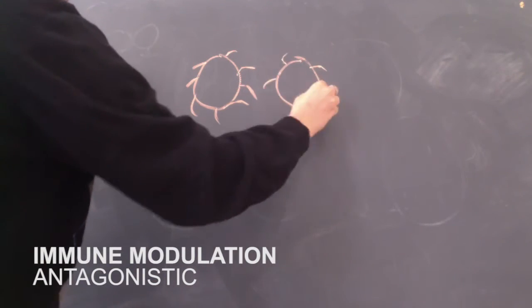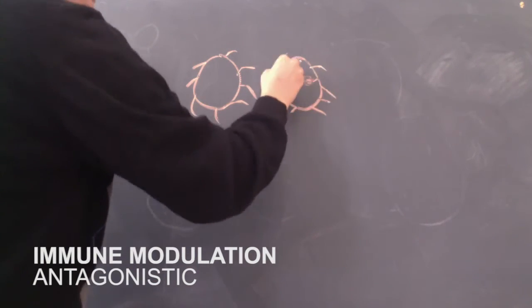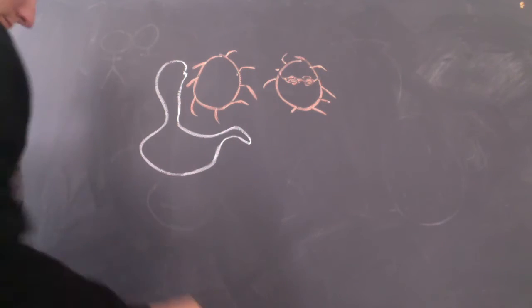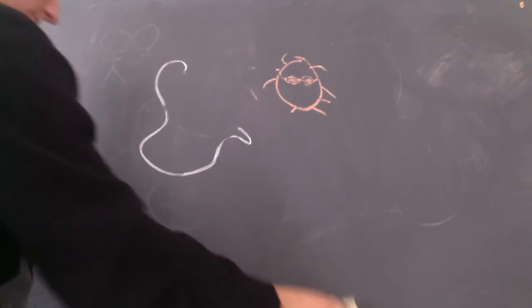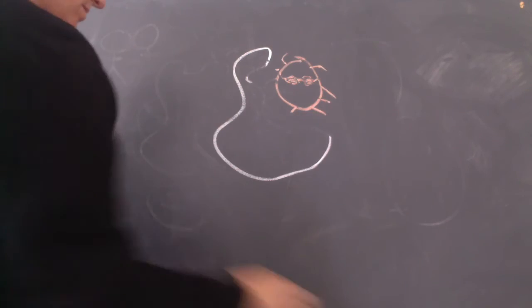On the antagonistic end of the spectrum, if two co-infecting pathogens are similar enough, they may be subject to cross-immunity, meaning the immune response to one also acts in controlling the other.